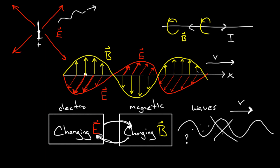All three of these directions are at right angles to each other. If you imagine a three-dimensional x, y, z axis: velocity is in one direction, the magnetic field is in another direction, and the electric field is in one more perpendicular direction. The magnetic field is perpendicular to the electric field, and both the magnetic and electric fields are perpendicular to the direction that the electromagnetic wave is traveling.